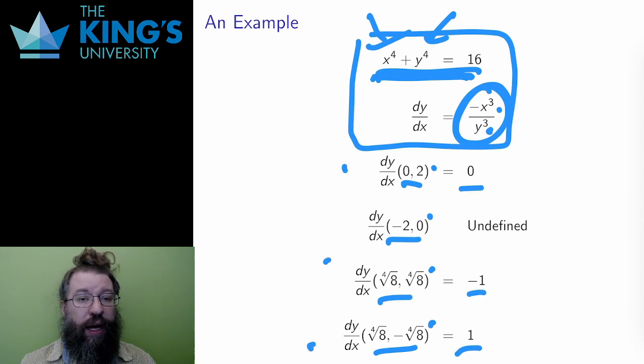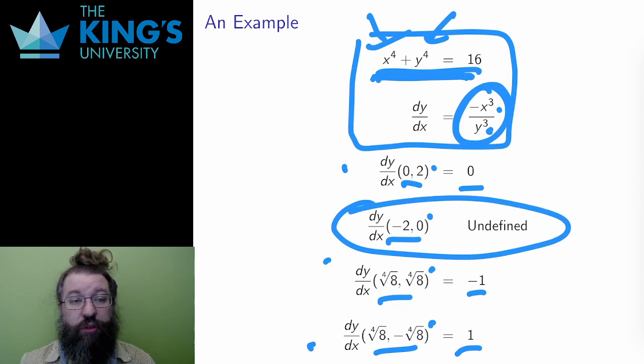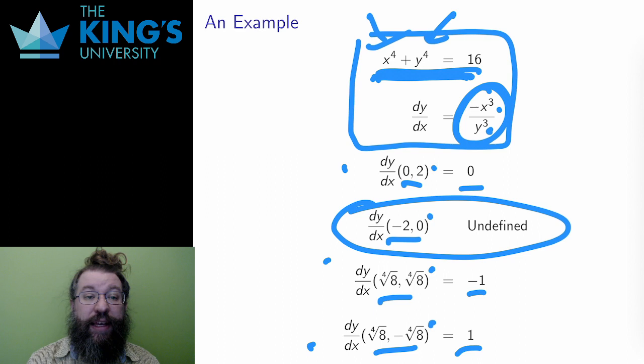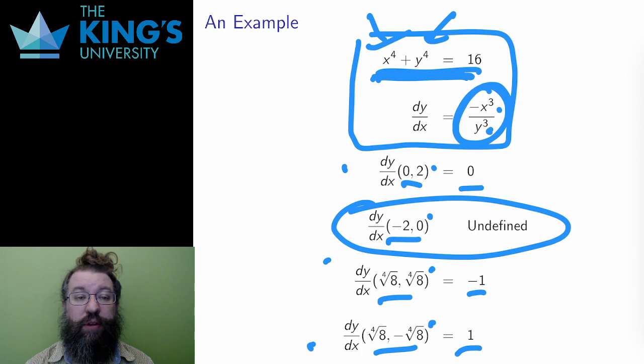However, if I tried to evaluate this, it would be division by 0 at the point negative 2, 0. And this is the risk of pretending something. Sometimes the pretense is just not true. At negative 2, 0, the locus cannot be the graph of a function. My assumption was false, so at that point the technique fails.